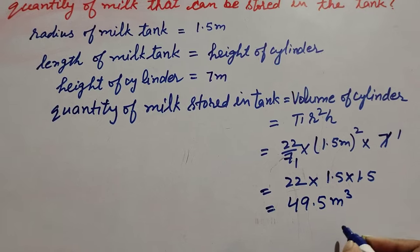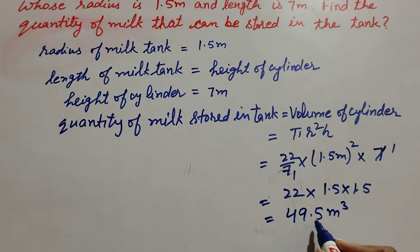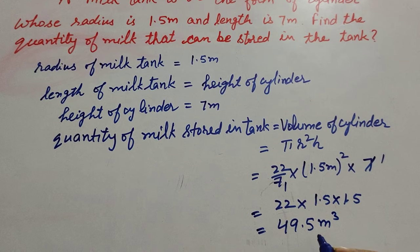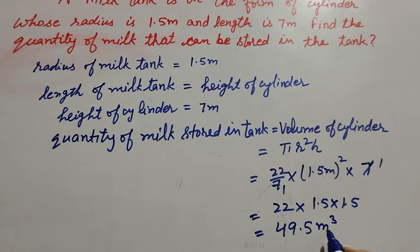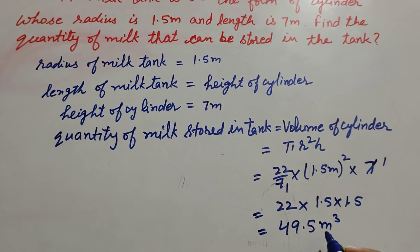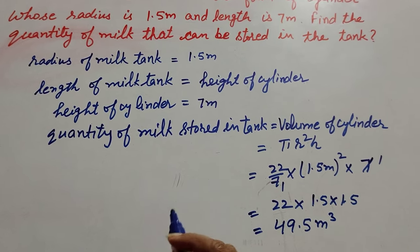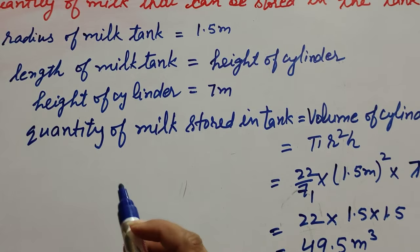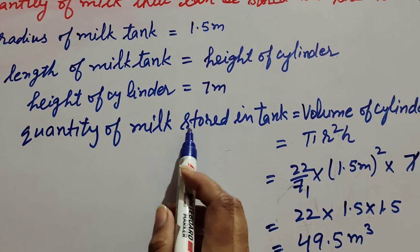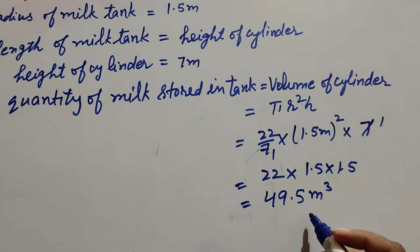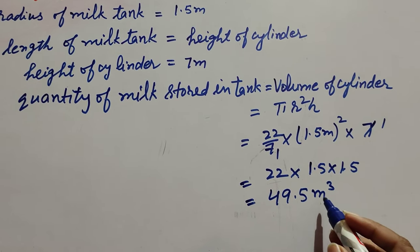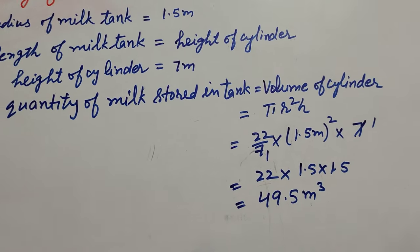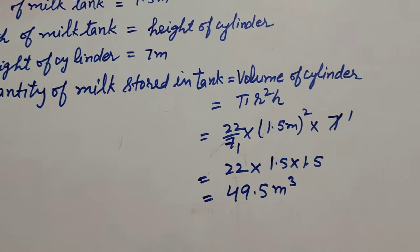So this is the volume of the cylindrical milk tank: 49.5 m³. We have to find the quantity of milk stored in the tank. We measure quantity of milk in liters, but the units are in meters, so first we need to change these units into liters.